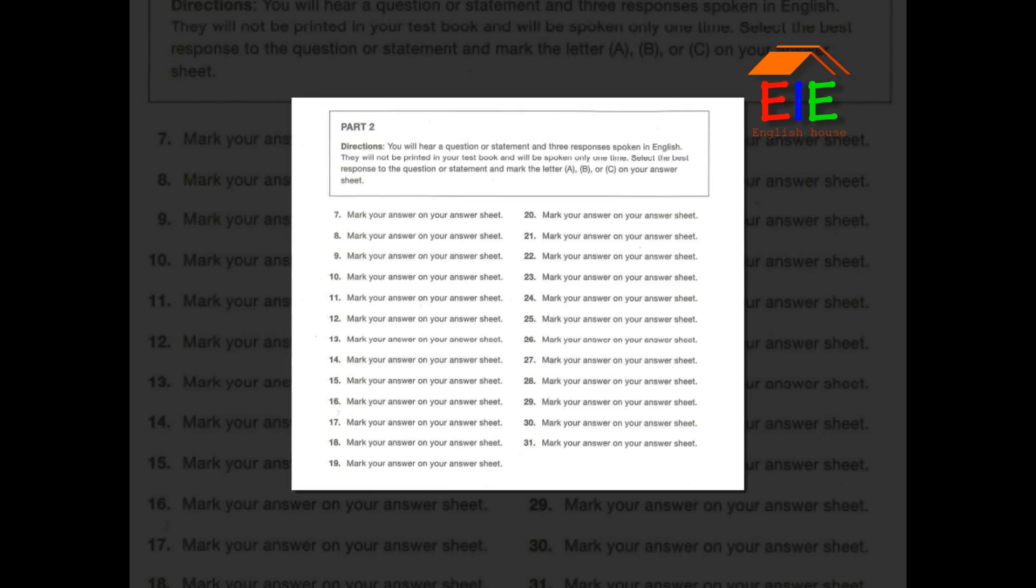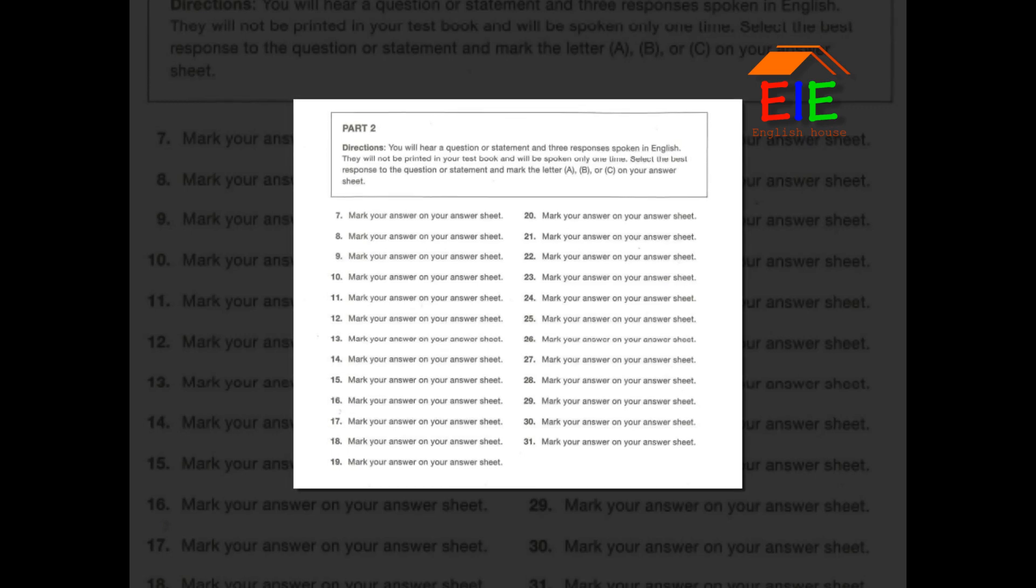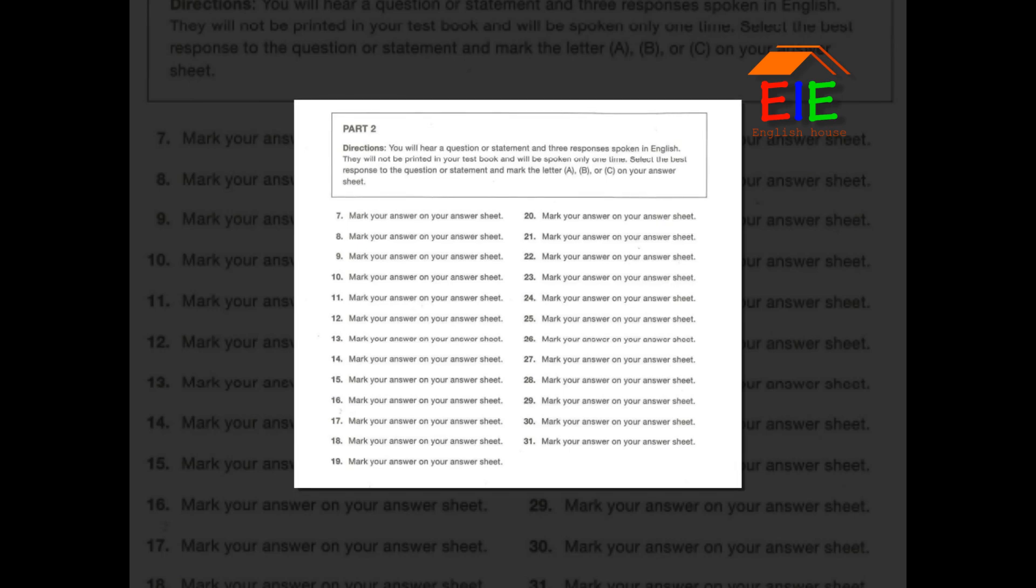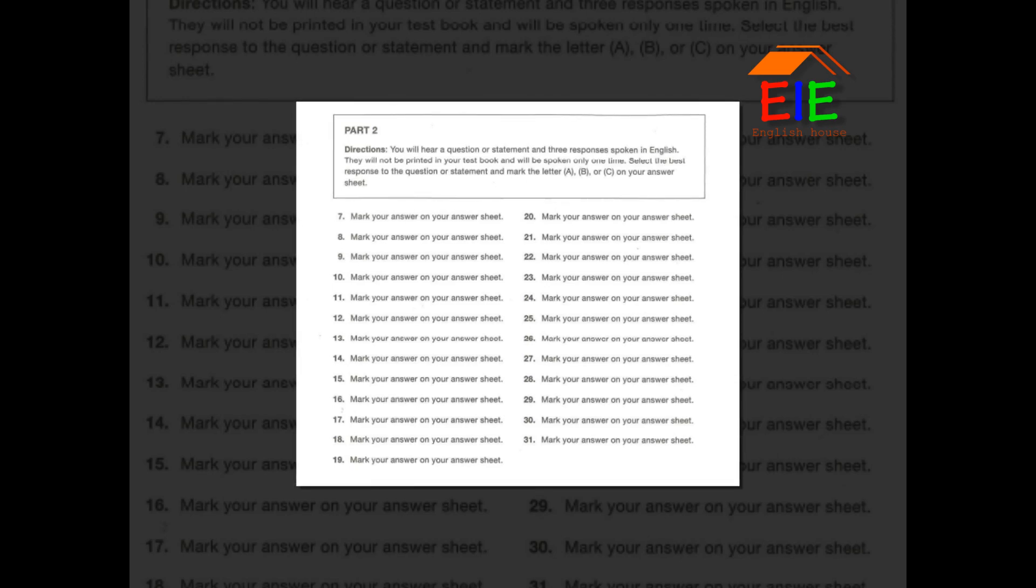Number 21: When was the last time the assembly line broke down? A. She's been out sick for a while. B. Raw materials are expensive. C. Last quarter, if I remember correctly.